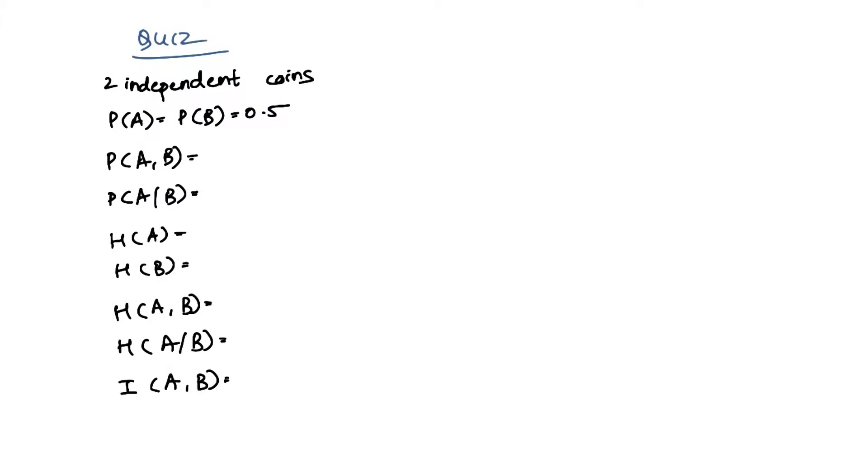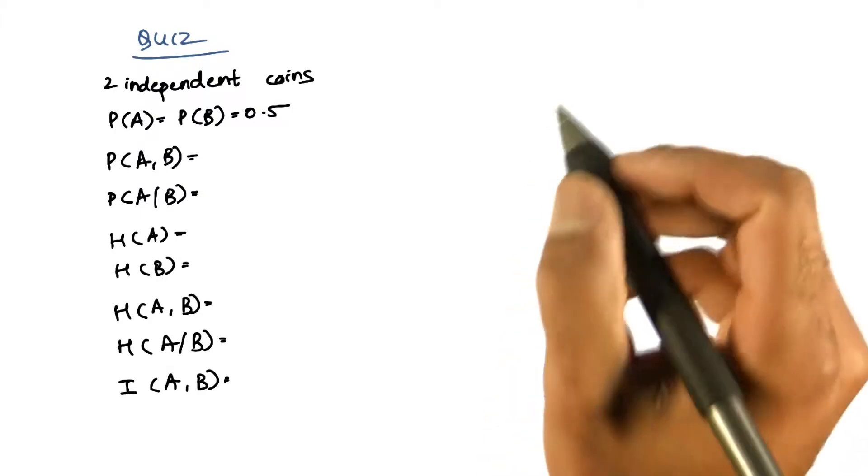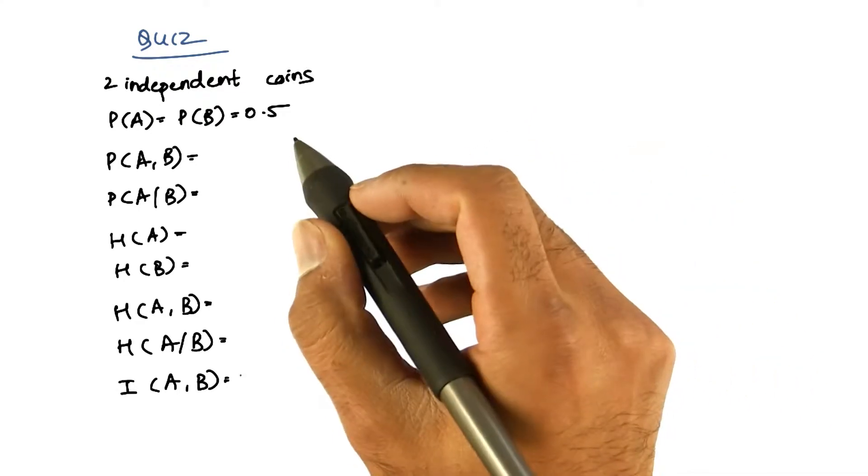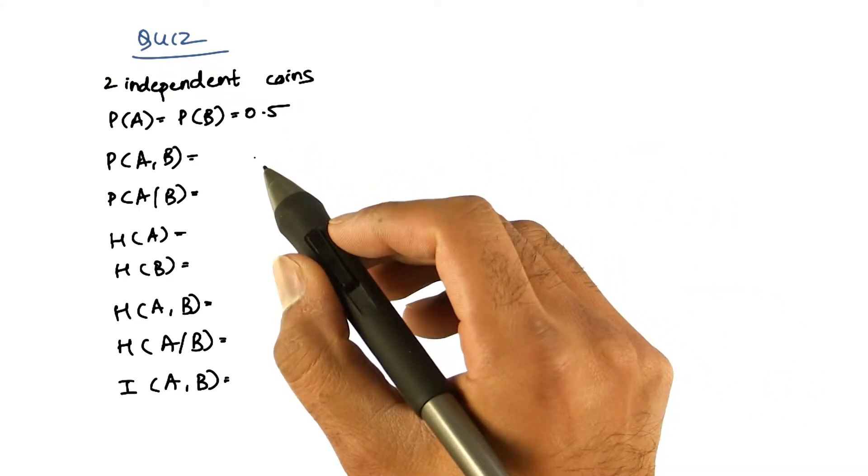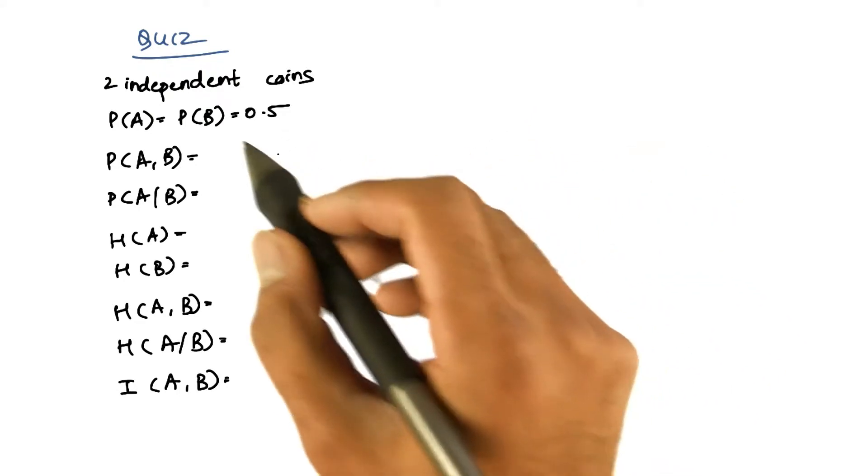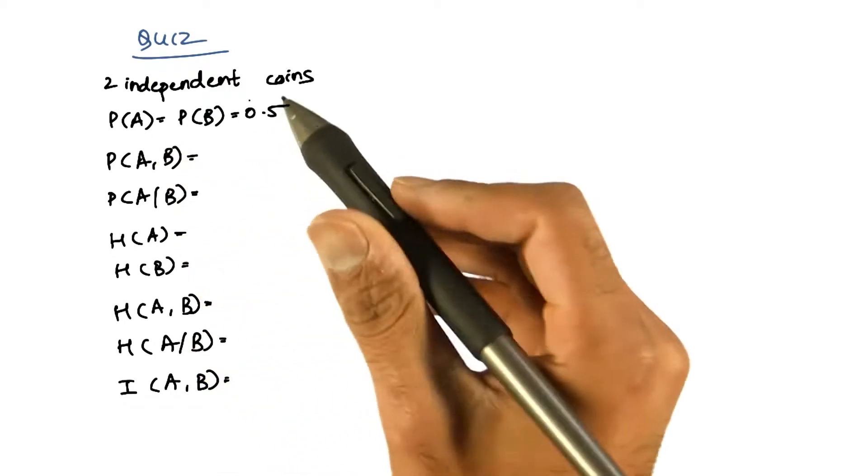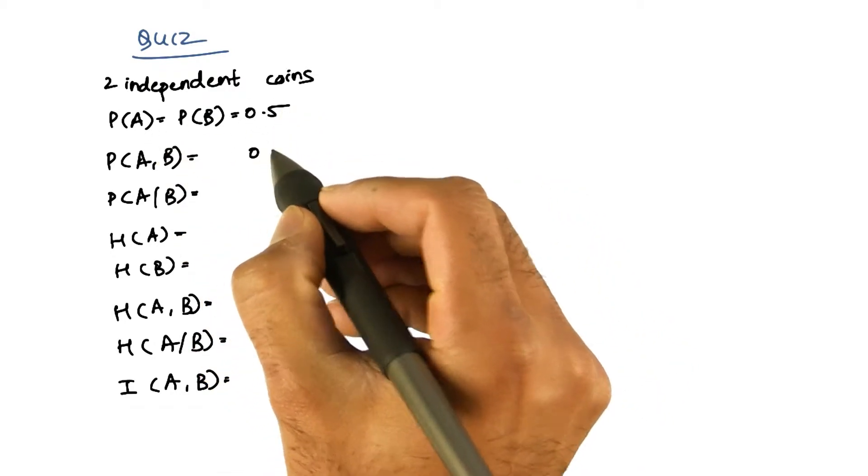Okay, let's substitute our values in the formulas. Since A and B are independent events, the joint probability is given by the product of probability of A and B, which gives us 0.25.